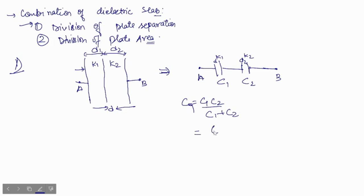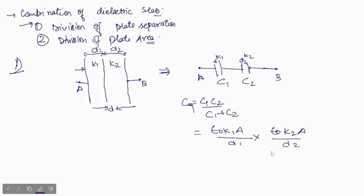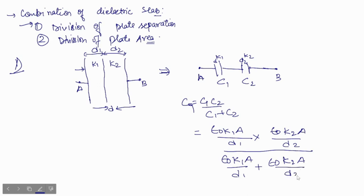Now, C1 will be ε₀ × k1 × A / d1, and the area A is the same for both. C2 will be ε₀ × k2 × A / d2. The equivalent capacitance is (C1 × C2) divided by (C1 + C2), which gives ε₀ × k1 × A / d1 multiplied by ε₀ × k2 × A / d2, divided by (ε₀ × k1 × A / d1 + ε₀ × k2 × A / d2).